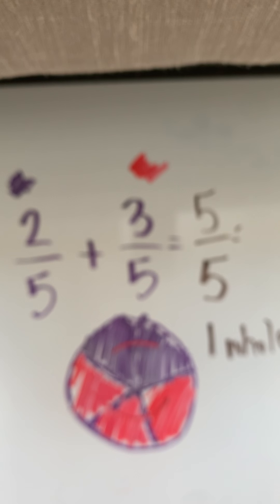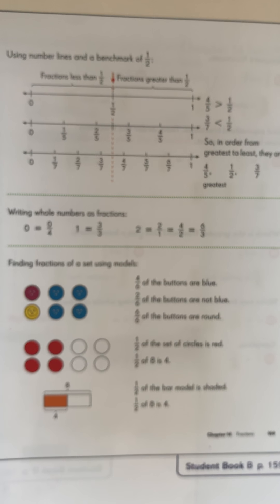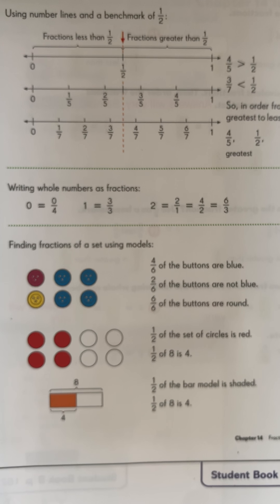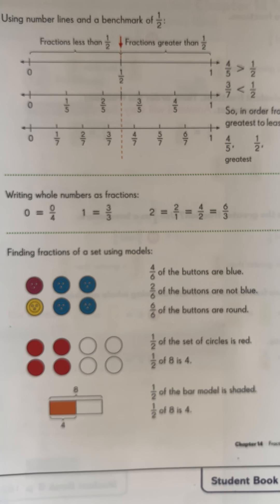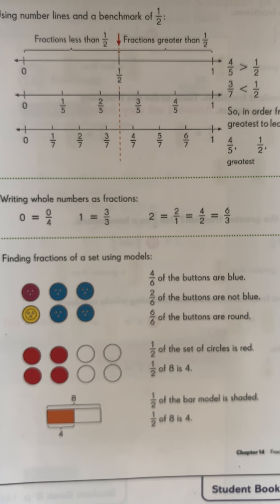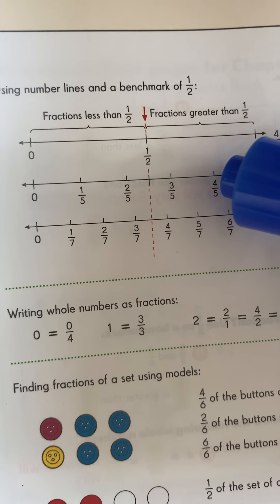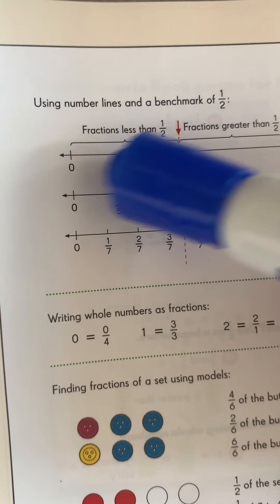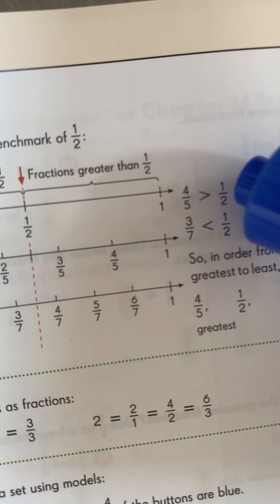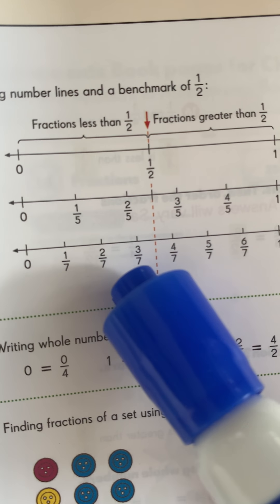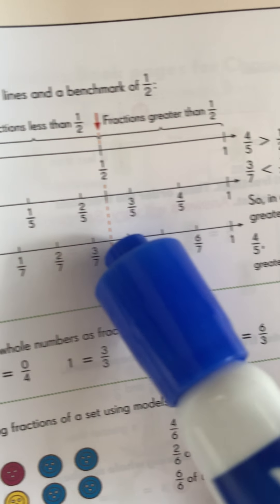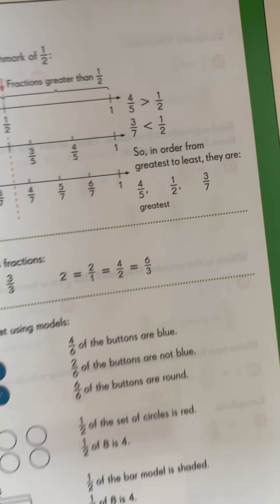So guys, let's take a look at page 159. Using number lines and a benchmark of a half, they wanted you to look at four fifths and see that four fifths is greater than just a half. Do you see that? And then three sevenths is less than a half. It's less than that half mark.